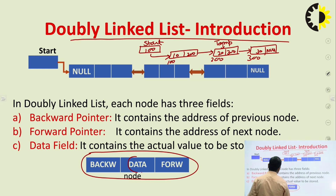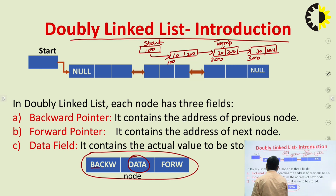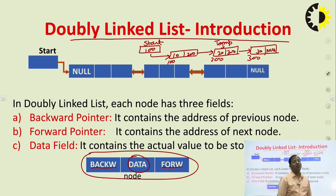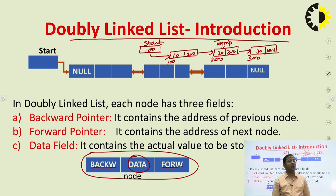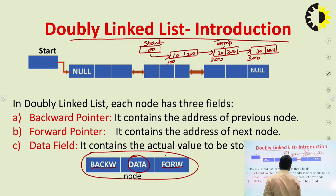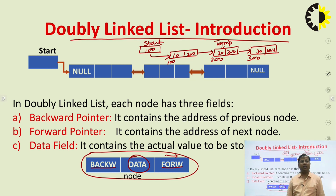The first part is the data field, which contains the actual value to be stored, and two pointer fields — two address fields. The first is the backward pointer or backward address field, which contains the address of its previous node. To store the address of the next node, there is a pointer called the forward pointer or forward address field.